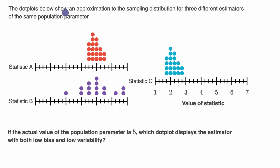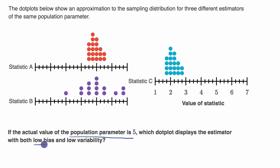The dot plots below show an approximation to the sampling distribution for three different estimators of the same population parameter. If the actual value of the population parameter is five, which dot plot displays the estimator with both low bias and low variability? Pause this video and see if you can come up with the answer. So the population parameter we're trying to estimate is five.